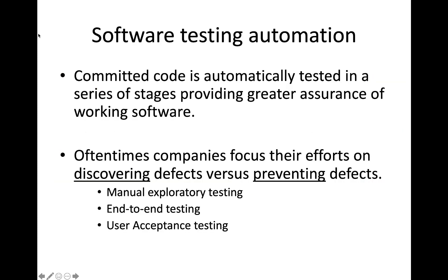Once your code has been committed to the pipeline, it goes through that initial unit testing and build process. From there, the code is going to be promoted through various testing phases. We automate this process, and the idea is that as our code progresses through a sequence of stages, we gain greater assurance that our code actually works and is going to work in a production environment. The closer our code gets to production, the greater assurance that we have that it's working.